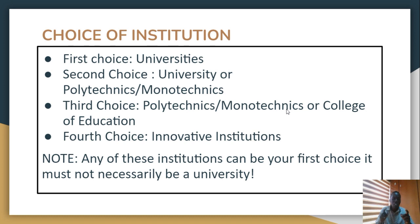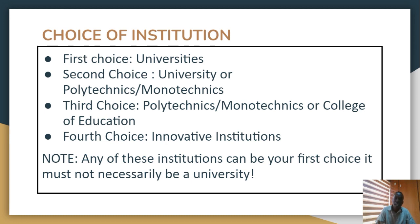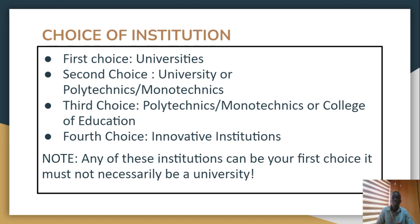The next point is the choice of institution. JAMB allows you to choose any of these institutions as your first choice. Normally, students assume that only universities can be chosen as first choice, but there are some who truly want to go to an innovative enterprise institution where they can learn a vocation. You can likewise choose such as your first choice — you can choose a university, a polytechnic, a monotechnic, or a college of education.